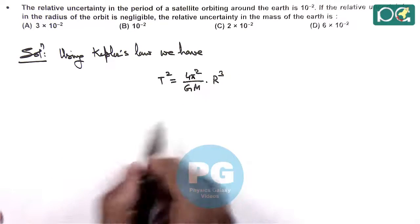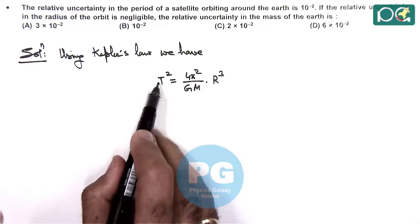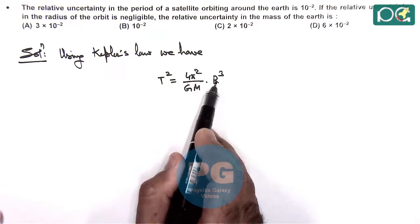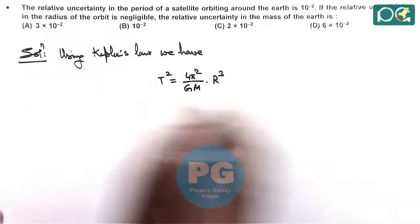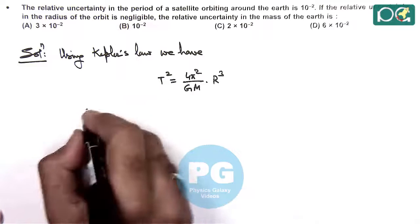Here, if we relate the uncertainties in the period, mass and radius, it is given that there is almost no uncertainty in the radius of orbit. So here...